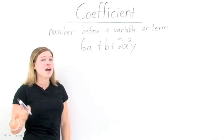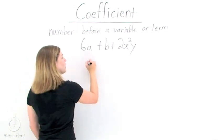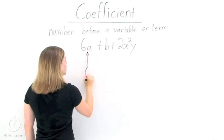We're looking for the number in front of a variable or term. So if we look at 6a, our coefficient is 6.